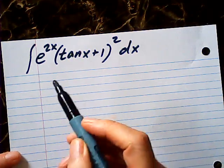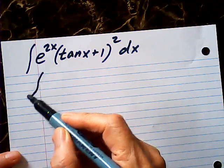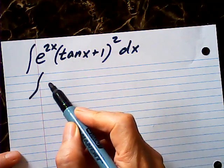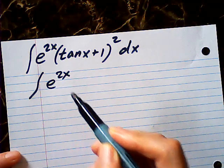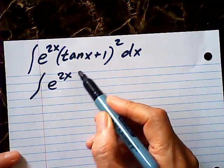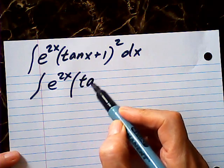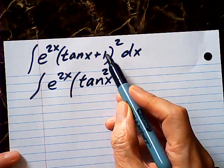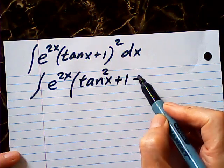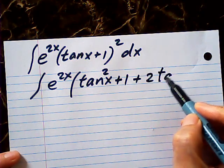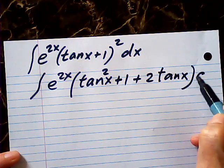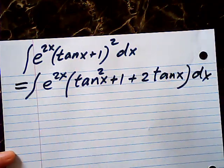Well, first I expand the bracket. This is e to the 2x. This will be tangent square x plus 1 plus 2 tangent x dx. Here, there you go.